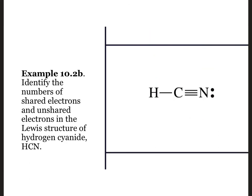How many shared and unshared electrons are in this Lewis structure of hydrogen cyanide? We have one single bond containing two electrons and one triple bond containing six electrons for a total of eight shared electrons. There is one lone pair giving us two unshared electrons.